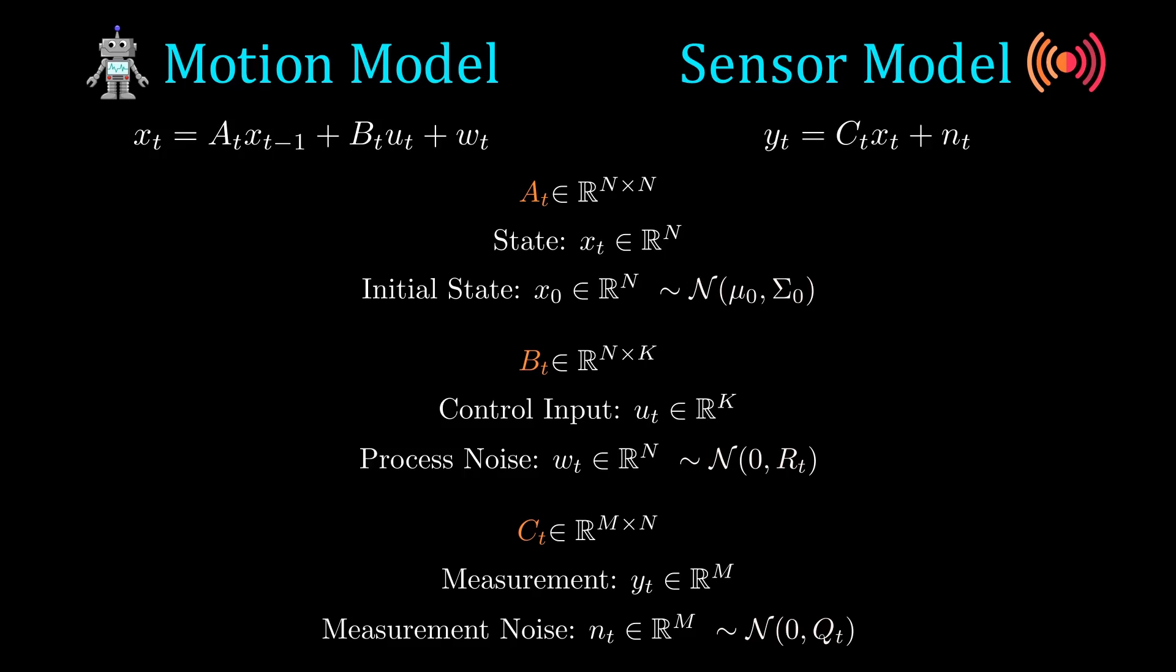In addition, to ensure that the probability distributions remain Gaussian throughout time step updates, we require the initial state to be Gaussian. It is distributed with mean mu naught and covariance sigma naught. We also require the noise to be additive Gaussian noise.